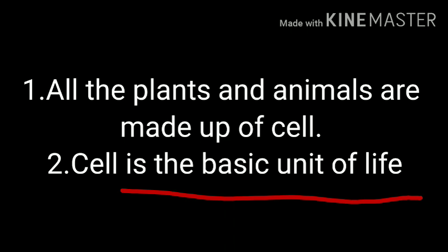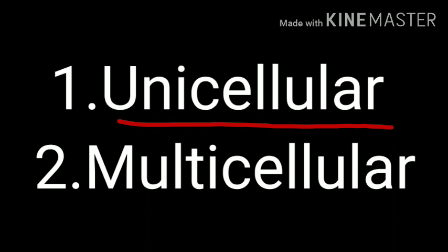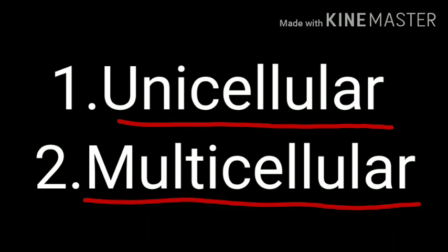Cells can be of different shapes and sizes. According to the number of cells present in a living body, organisms can be of two types. One is unicellular and the other one is multicellular.